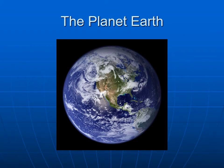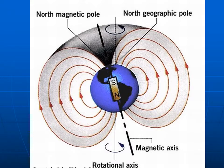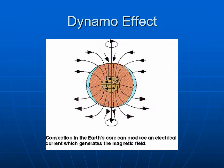We're talking about Earth's magnetic field and how this magnetic field is tilted a little bit with respect to the axis. The question is, where does the magnetic field come from? The current idea of how we get the magnetic field is the dynamo effect.